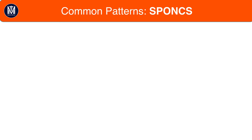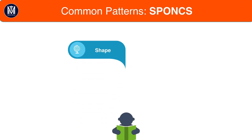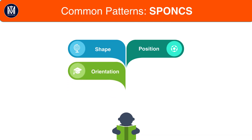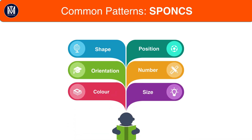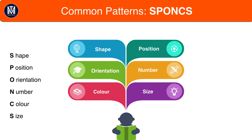SPONX stands for Shape, Position, Orientation, Number, Colour and Size. This covers most of the possible patterns that you can get on test day in the abstract reasoning section. In the following slides we'll go through them step by step, and in the following tutorials we'll go through each one in much more detail with relevant examples to illustrate.